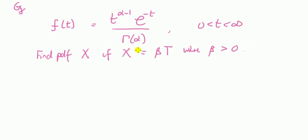Okay, example, let's consider this PDF function, a random variable of t. It's clearly continuous. I want to find the PDF of x, if x is equal to beta times t, where beta is bigger than zero.